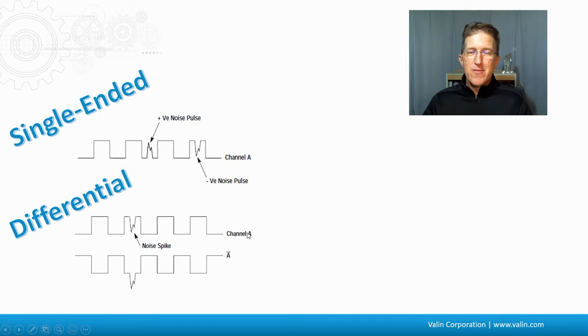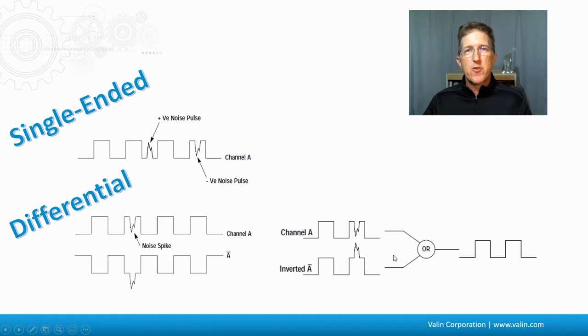So then you have a channel A and an A-not being the opposite. When the A-not is inverted, that electrical noise is also inverted, and then they can be compared. When it's run through a comparator, you get one clean signal.